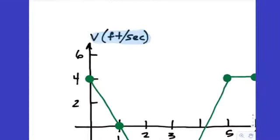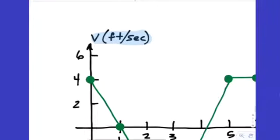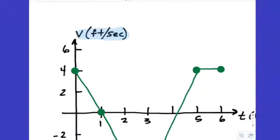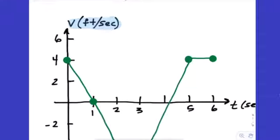So here's what you might want to do when you're given a graph — just calibrate your mind for the problem. The y-values are the velocities. Whenever the y-values are positive, it's moving in the positive direction, which is either right or up, and when the y-values are negative, it's moving in the negative direction, which would be left or down.